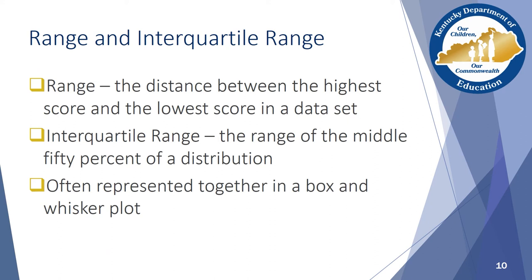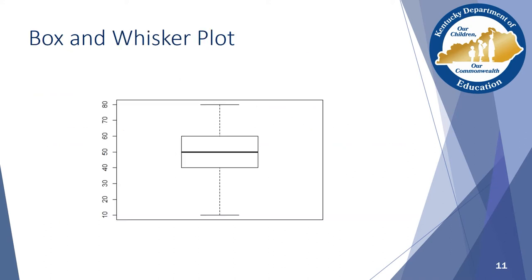The range represents the distance between the highest score and the lowest score in a data set. While range represents a whole body of data, the interquartile range represents only the middle 50% of scores. Typically, these two calculations are represented in a box and whisker plot. On this plot, the box represents the interquartile range, while the whiskers represent the full range of scores. A box and whisker plot will also typically indicate the median scores for comparison.